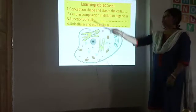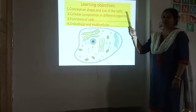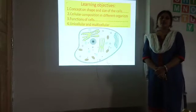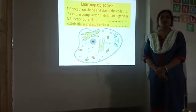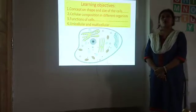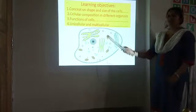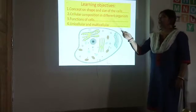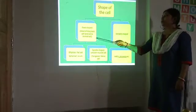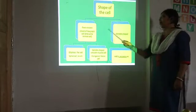First of all, we will know about the concept of shape and size of the cell. If we see different types of cells, as we have learned in class 8, there are different types of cells in our body and those cells are not all of the same size and shape. They can be of two types mainly: fixed shape and variable shape.